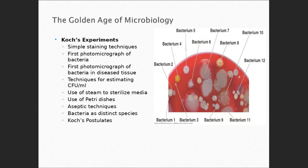This is a petri dish — it's got media in it. Media is nutrients for microorganisms — in this case a solid, where the one Pasteur used was a liquid broth. This is media growing lots of different bacteria, and each of those bacteria have a different colony. Each of those little round things is a colony, each derived from one single cell. Because they look different, they are different species.